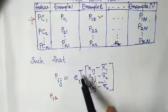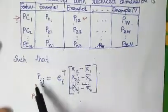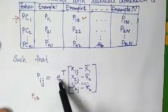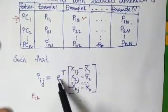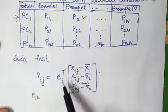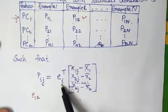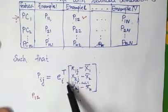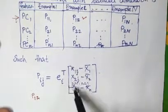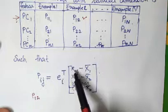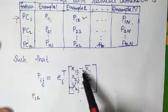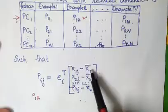To find the values in the new dataset, P_ij equals the transpose of the normalized eigenvector multiplied by the vector (x1j minus mean of x1), where x1j is the original data value for sample j and mean of x1 is the feature mean.